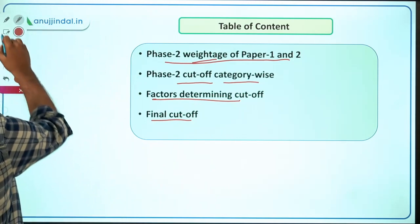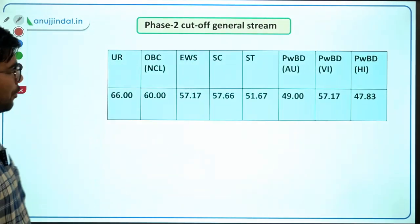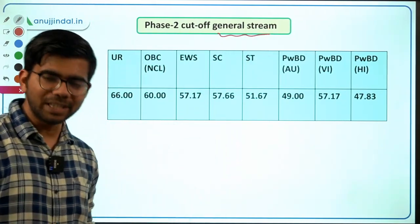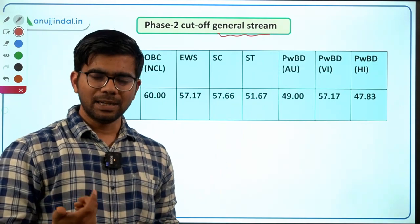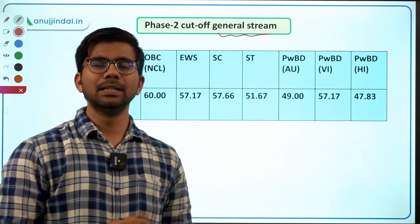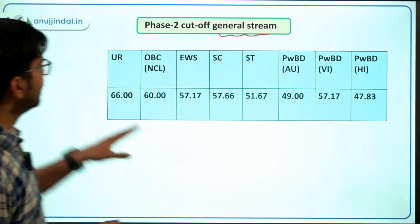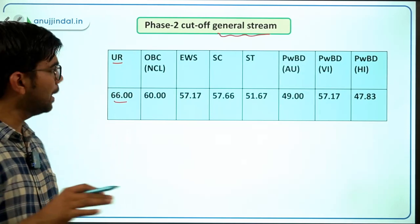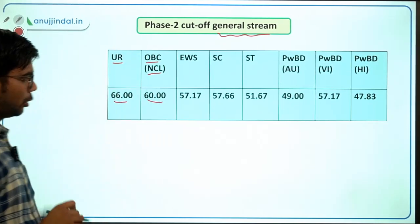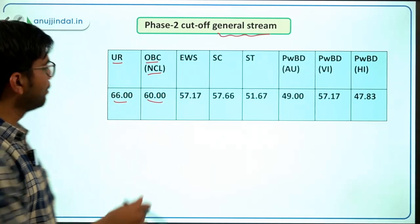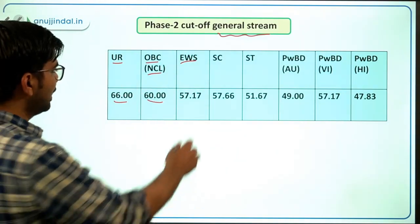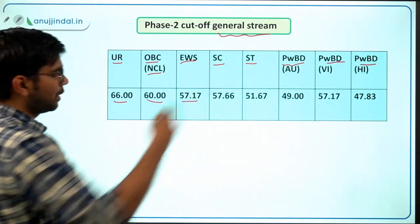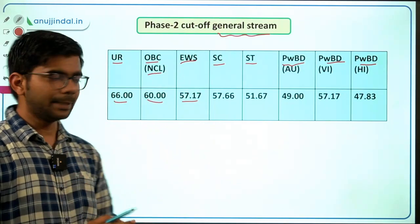Starting with Phase 2 cutoff for the general stream. SEBI conducts examinations for different streams like IT, legal, general, and engineering, but our focus is only on the general stream. The cutoff for the unreserved category was 66 out of 100. OBC non-creamy layer cutoff was 60. EWS cutoff was 57.17. SC, ST, and persons with benchmark disabilities had their respective cutoffs for the general stream.